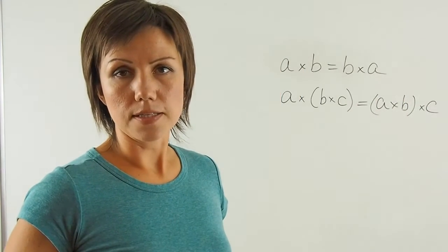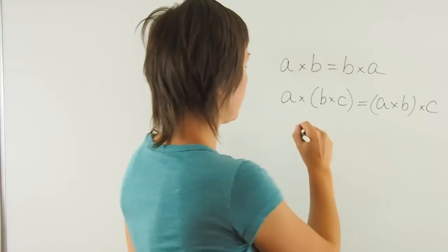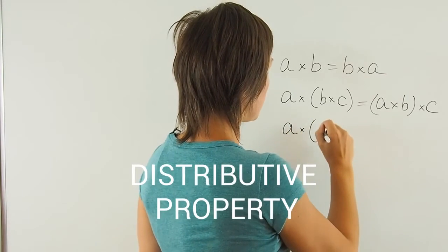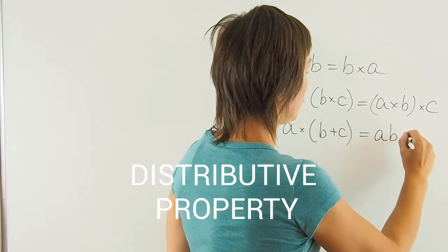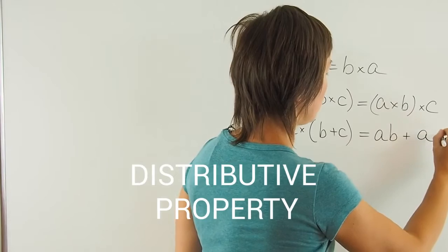And the last one is distributive property. A times B plus C is equal to AB plus AC.